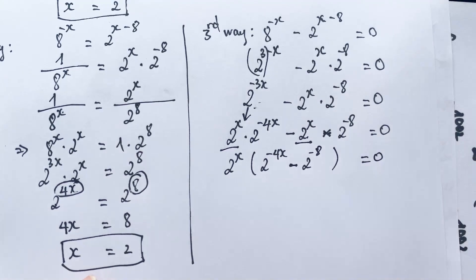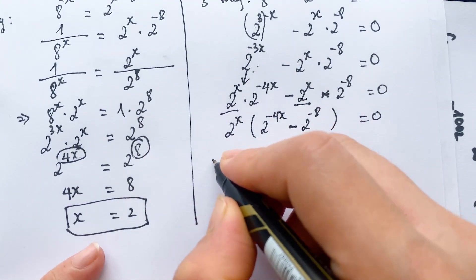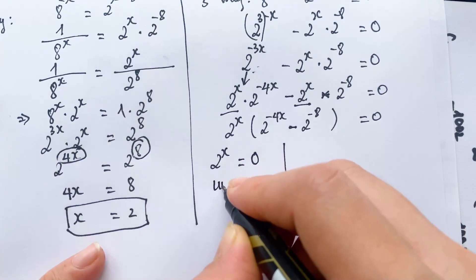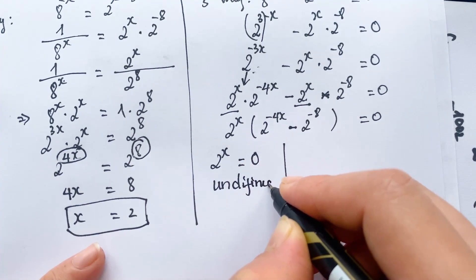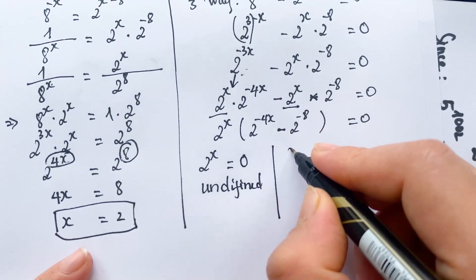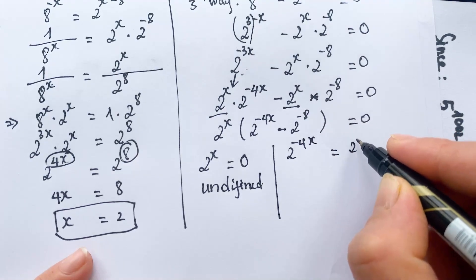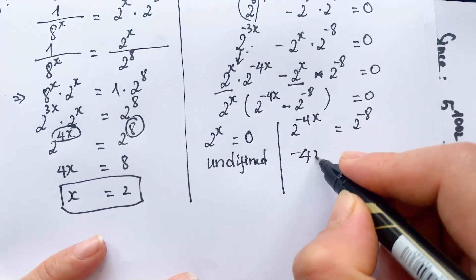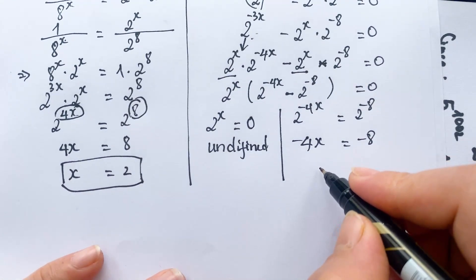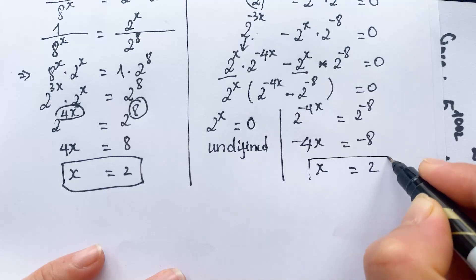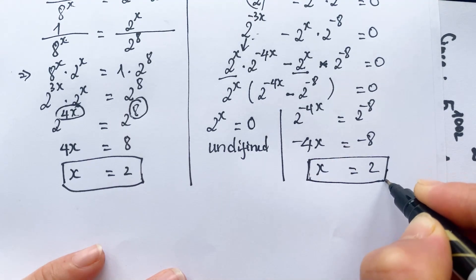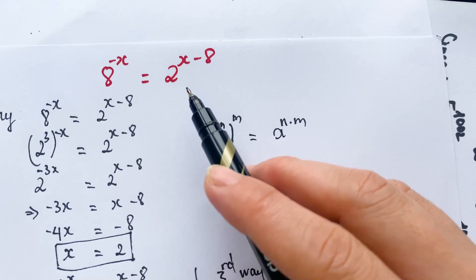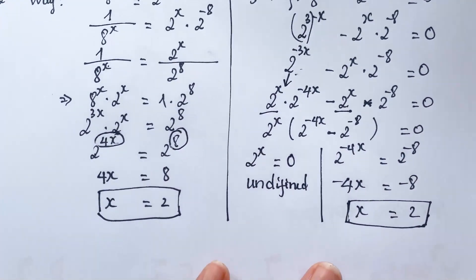So 2 power x equals 0 is undefined. For the other factor: 2 power minus 4x equals 2 power minus 8. Moving to the right hand side: minus 4x equals minus 8, therefore x equals 2. We have three different ways to solve this exponential equation and all give x equals 2. Thank you for watching my video, don't forget to subscribe to my channel — love you all, bye bye.